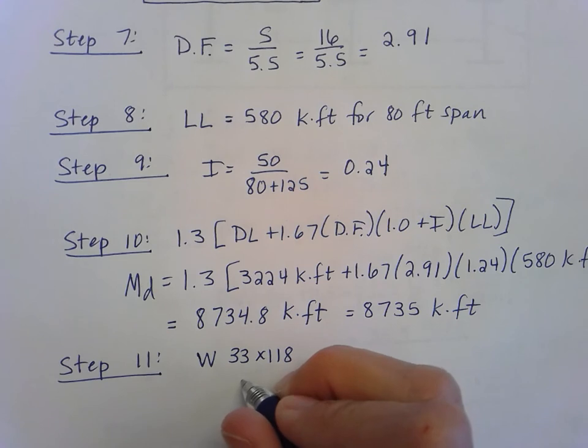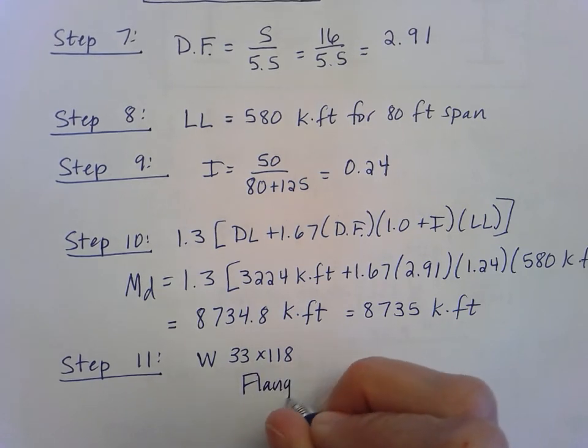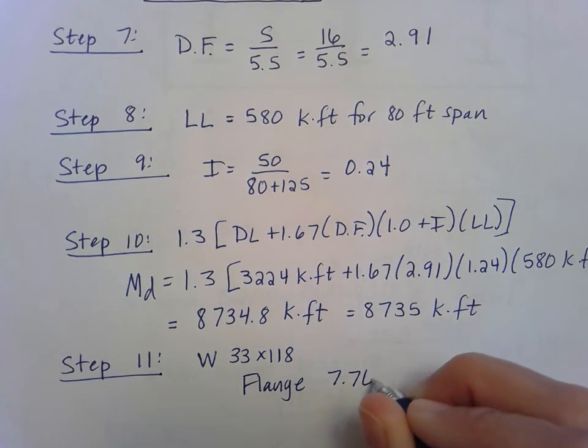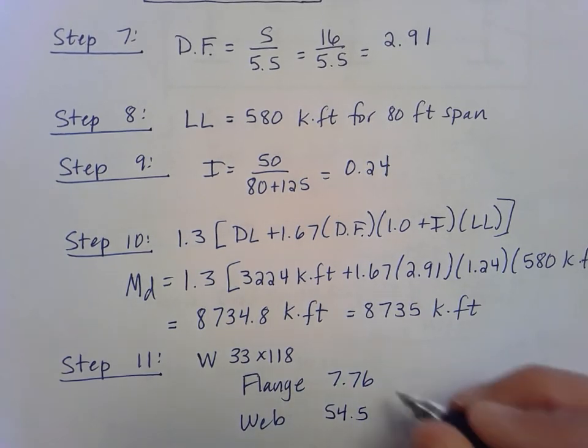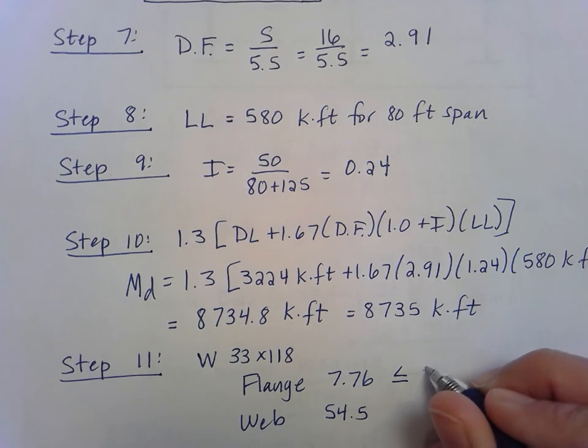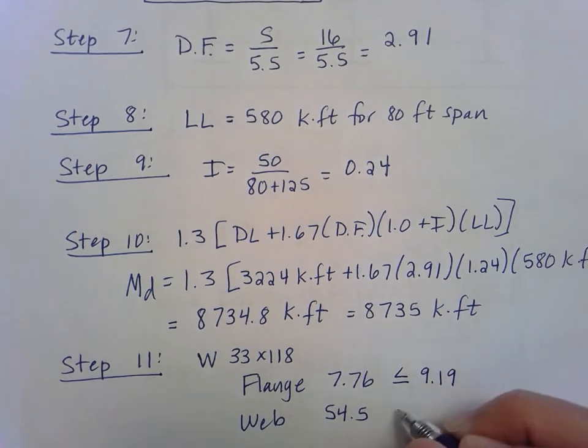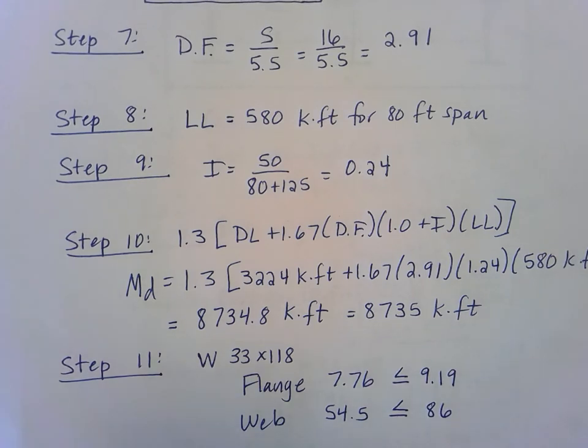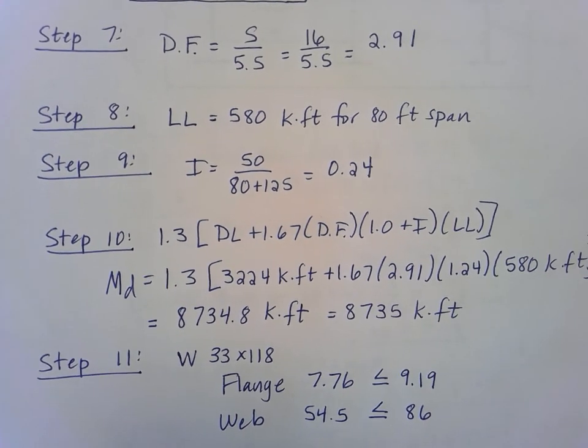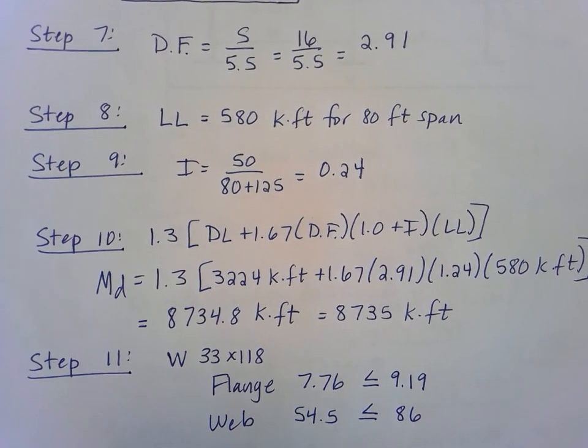So for the flange, we have 7.76, and for the web, we have 54.5 for our section checks. They're both going to work. This is less than the 9.19 required, and this is less than or equal to the 86 required. Remember, if you're pulling this prefab girder off the table, it's always going to work. But we go through this step just to make sure you remember that you will have to do those calculations if you are using plate girder and building that up yourself.